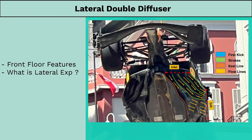We all know how the front floor of an F1 car acts like a venturi tunnel if you take a side view section of the floor — there are tons of YouTube videos that explain this. However, what most of us miss out on is how the front floor works laterally. To understand how the front floor of the RB19 potentially works as a lateral diffuser, let us capture some of its features and understand what they're doing.